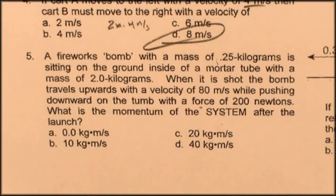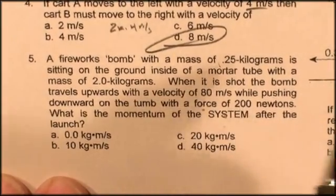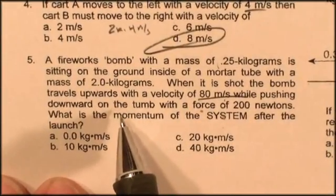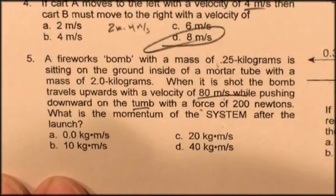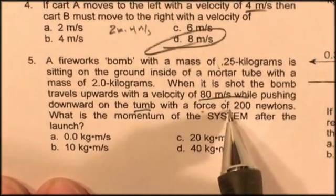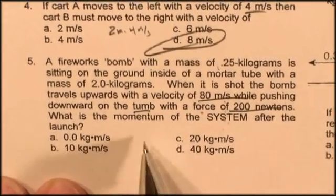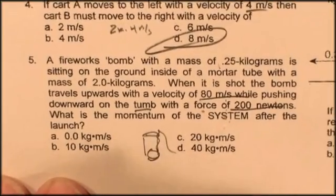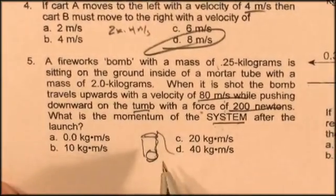A fireworks bomb has a mass of 0.25 kilograms. It's sitting on the ground inside a mortar tube with a mass of two kilograms. On the shot, the bomb travels up with a velocity of 80 meters per second while pushing downwards on the tube with a force of 200 newtons. What is the momentum of the system after the launch? Well, the fireworks sitting there in the thing, the momentum was zero. What will be the momentum of the system afterwards? Well, the momentum in the system can't change.